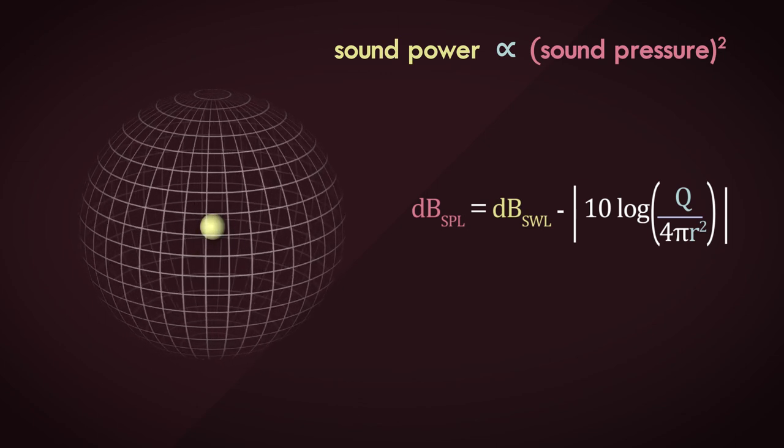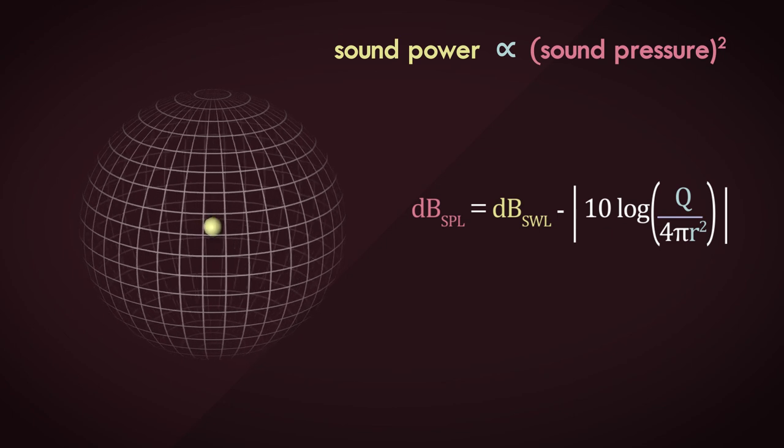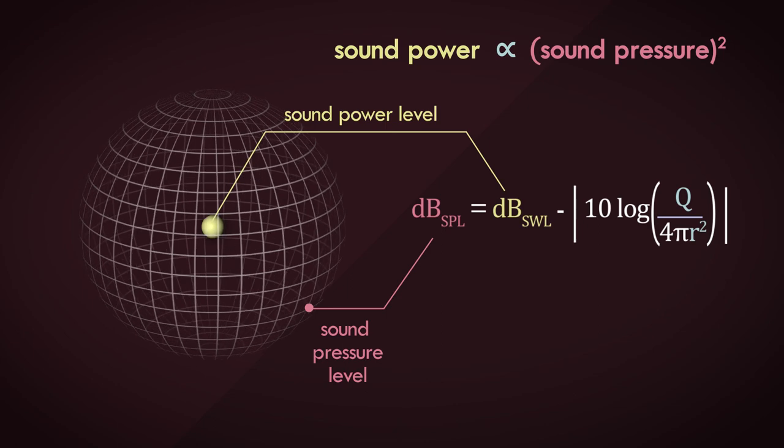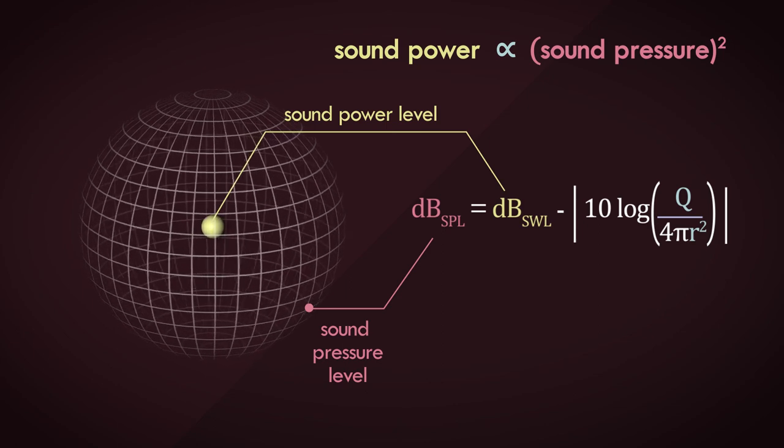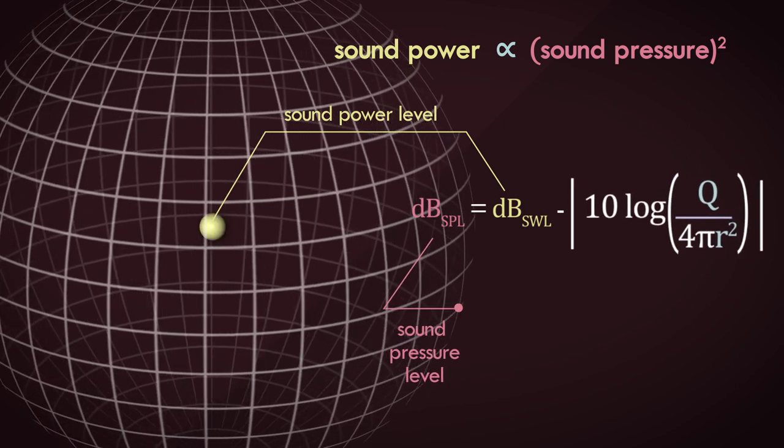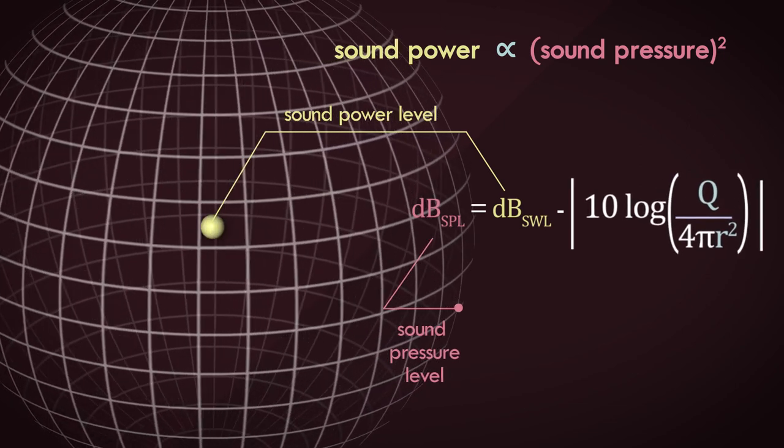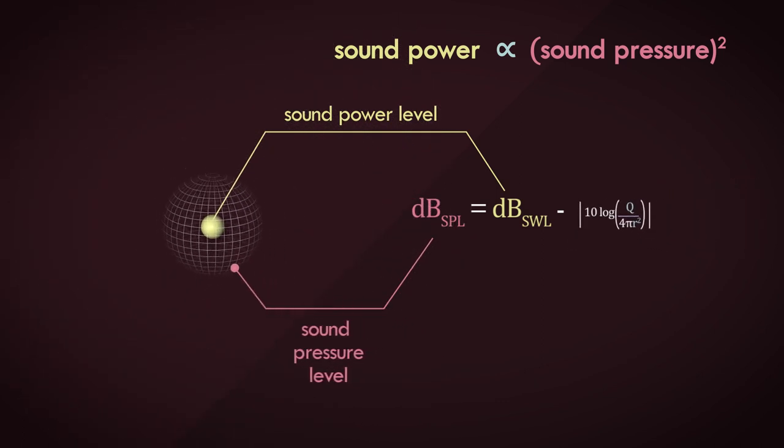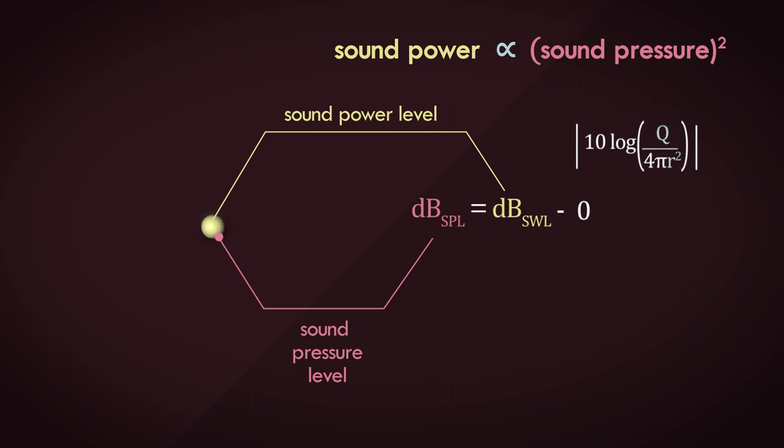Just by looking at it, it sort of makes sense. Sound pressure level is equal to the sound power level minus some value. As the distance from the source increases, the larger this term gets and the smaller the sound pressure level is. Or when you move closer to the source, the pressure level increases until you're right up against the source, where the sound pressure level is the exact same as the sound power level.